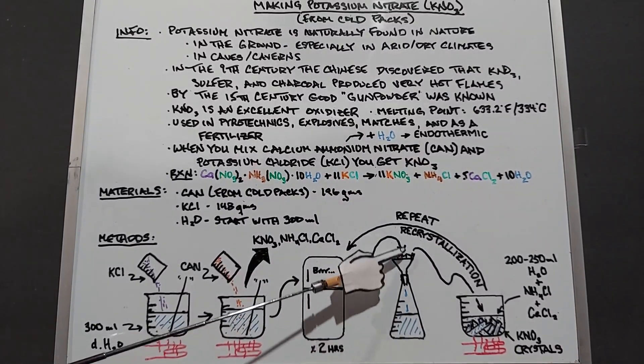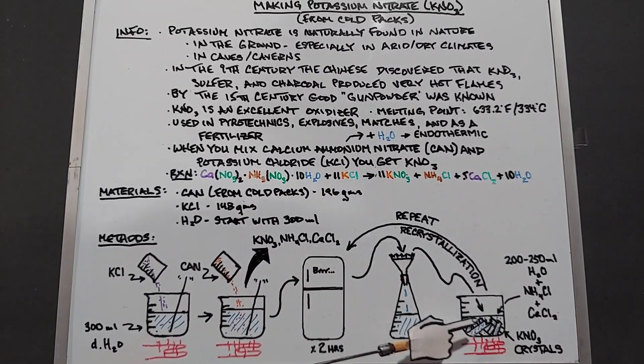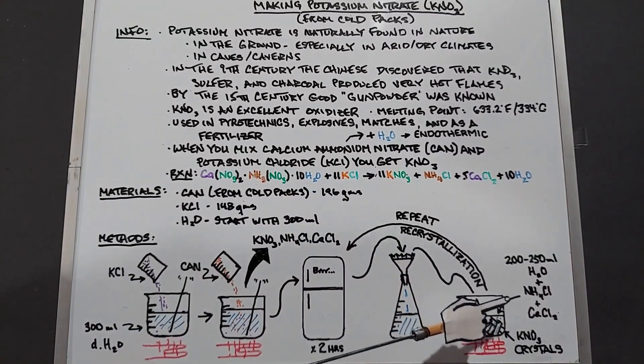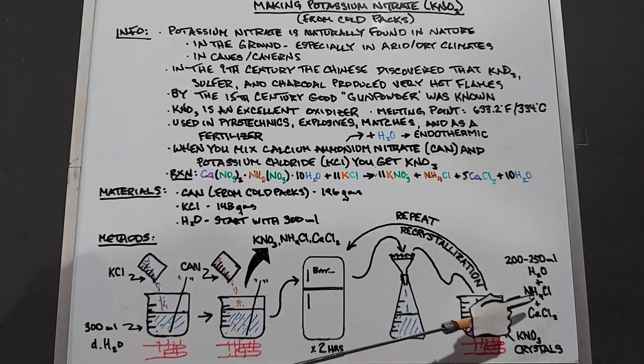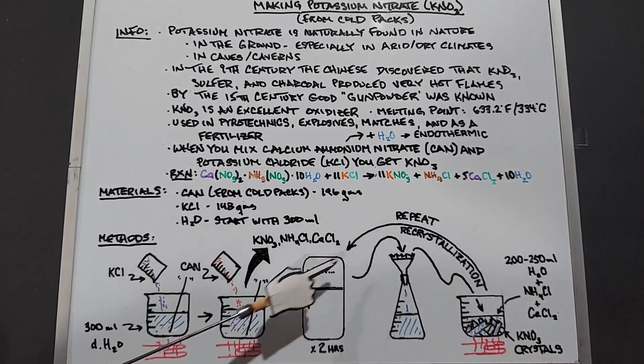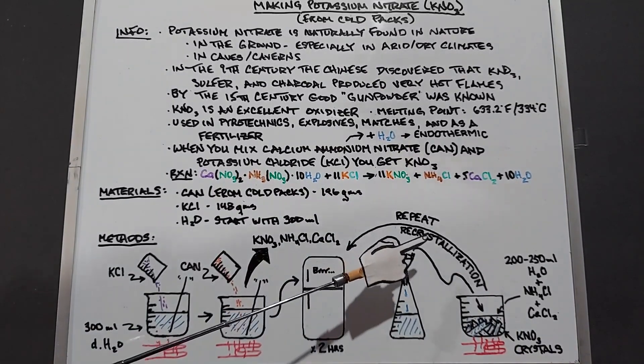You filter this, you take the solids from up here, mostly potassium nitrate, and re-dissolve it in water. I'm going to use between 200 to 250 milliliters this time. When you do that, you're going to have of course your potassium nitrate as the highest percentage and the ammonia chloride and calcium chloride as much lower percentages. So it's going back in the freezer, repeating this and doing a recrystallization.